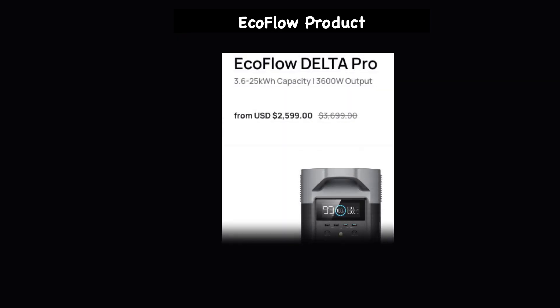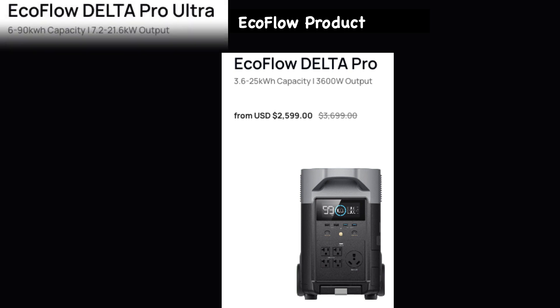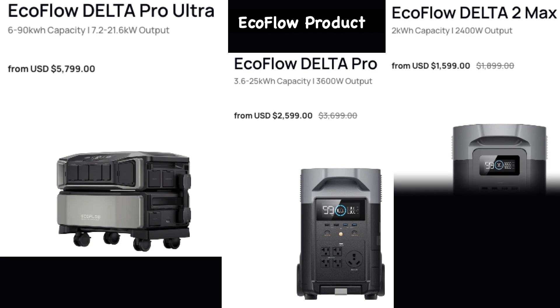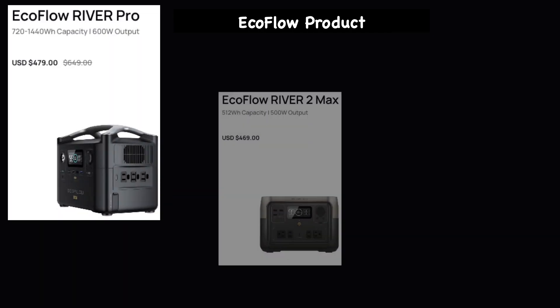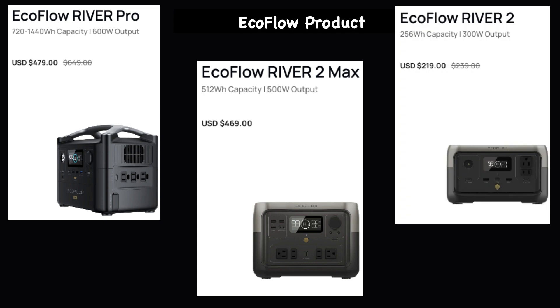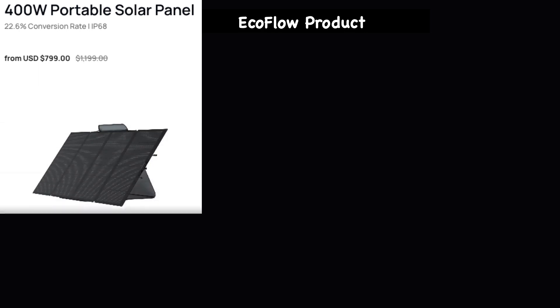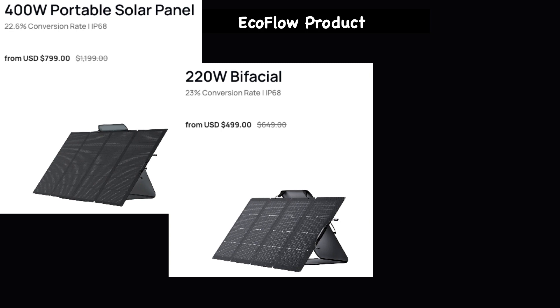Here are just a few of their products, starting with the EcoFlow Delta Pro and Delta Pro Ultra, the Delta II Max, the Delta II, the Wave II, the Glacier, and the River II Pro. Also the River Pro, the River II, and a range of portable solar panels including a 400-watt portable solar panel, a 200-watt bifacial panel, and the Glacier.